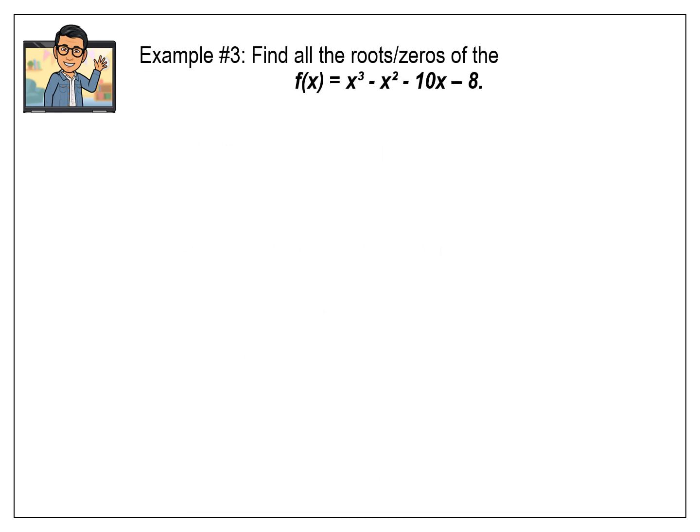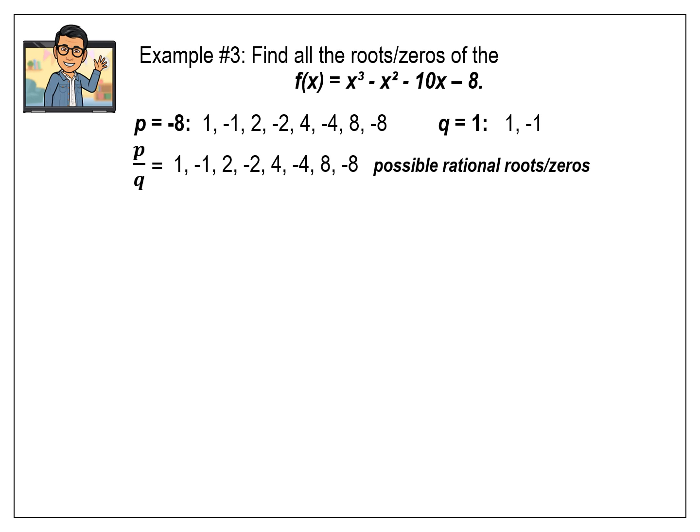Let's have example number 3: find all the roots or zeros of the polynomial function x cubed minus x squared minus 10x minus 8. Here p is equal to negative 8, with possible values 1, negative 1, 2, negative 2, 4, negative 4, 8, and negative 8; and q is equal to 1, with possible values 1 and negative 1. So the possible rational roots are: 1, negative 1, 2, negative 2, 4, negative 4, 8, and negative 8. Since the highest exponent is 3, we are looking for 3 rational roots or zeros.